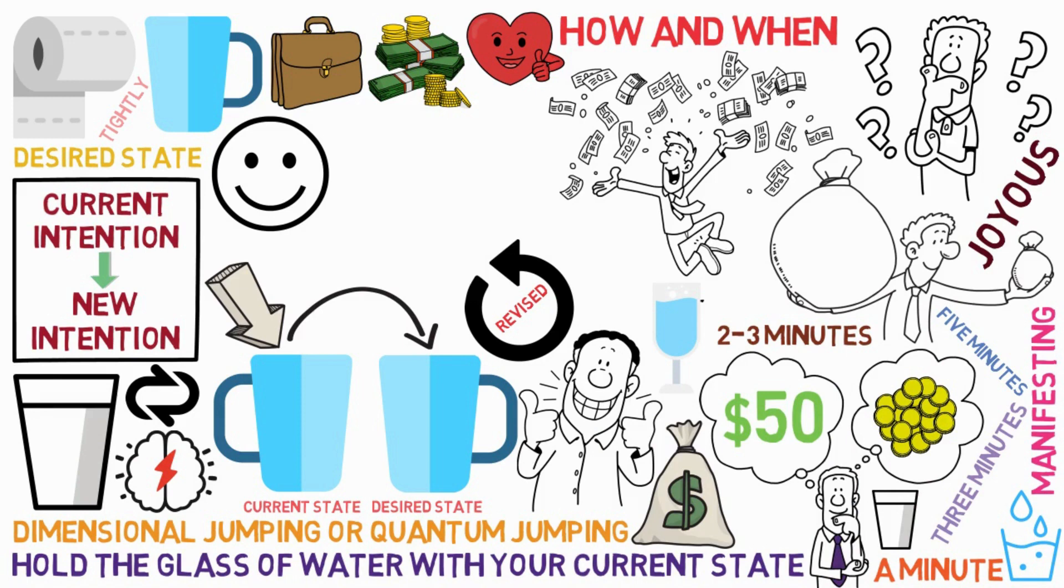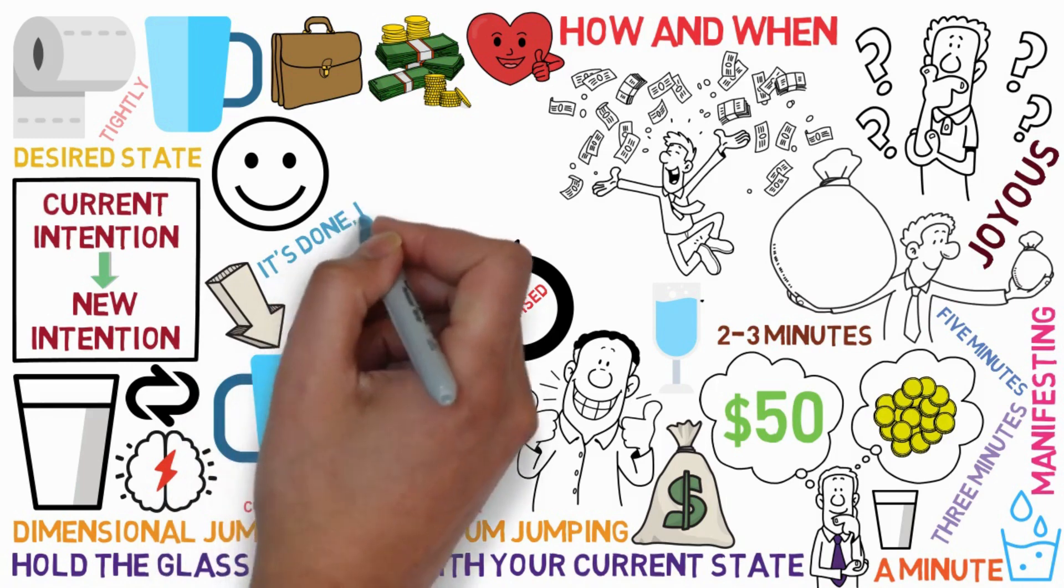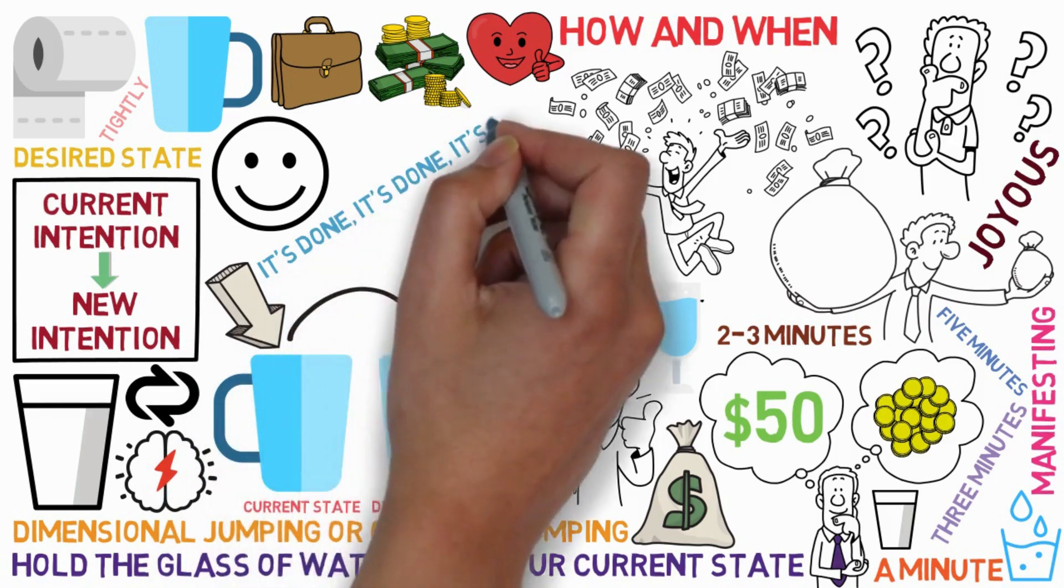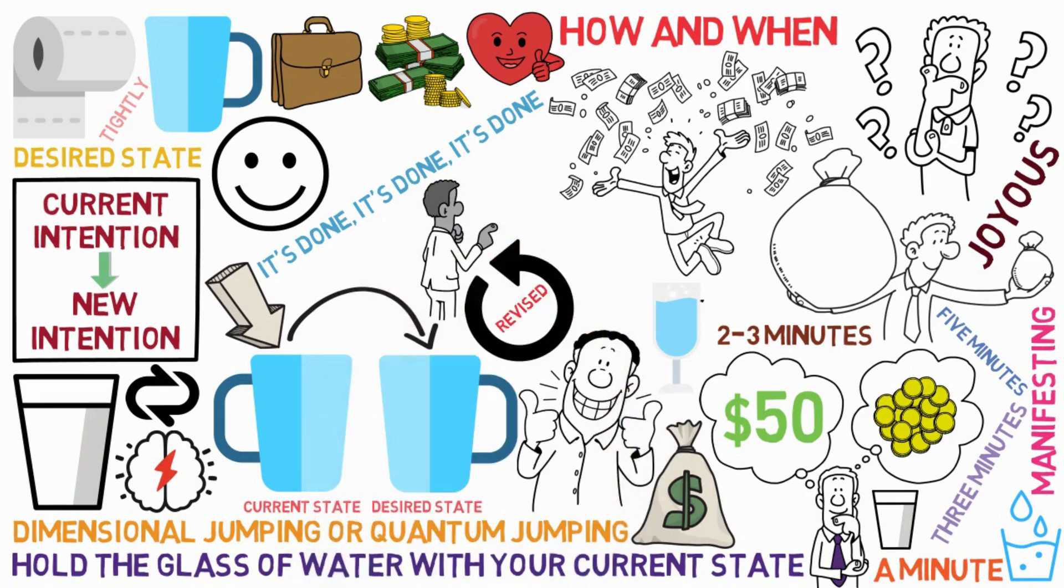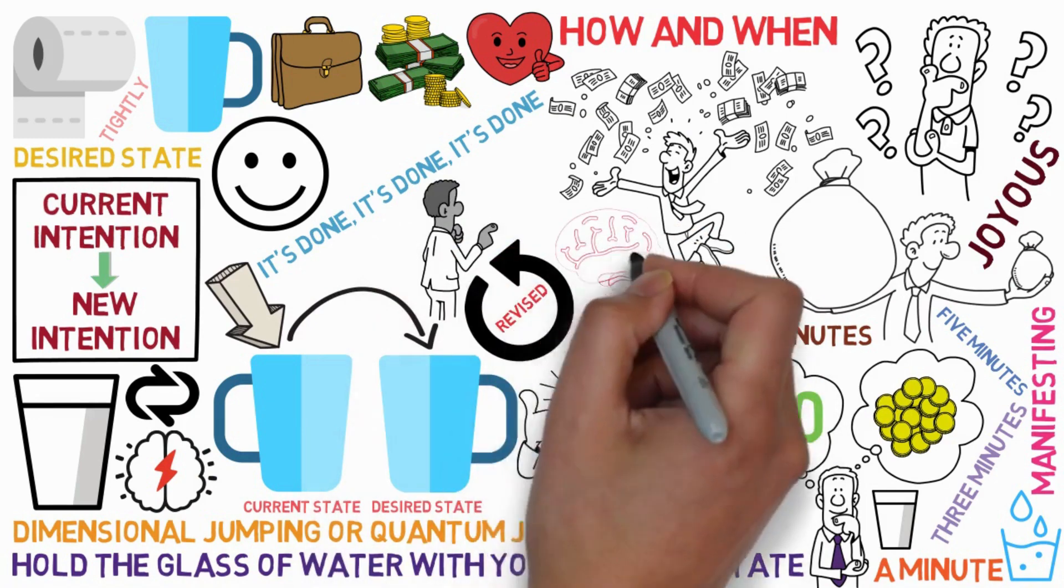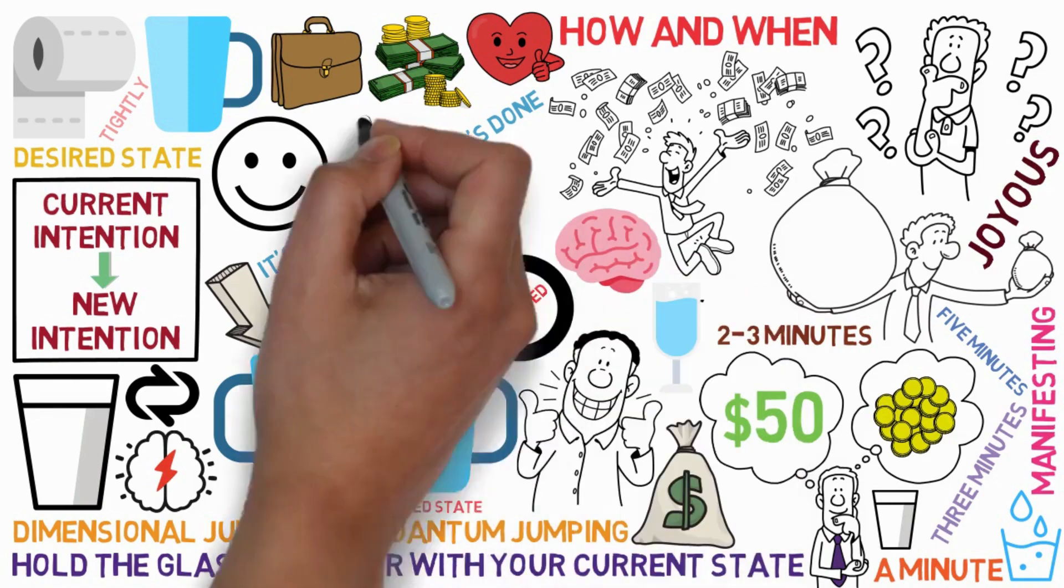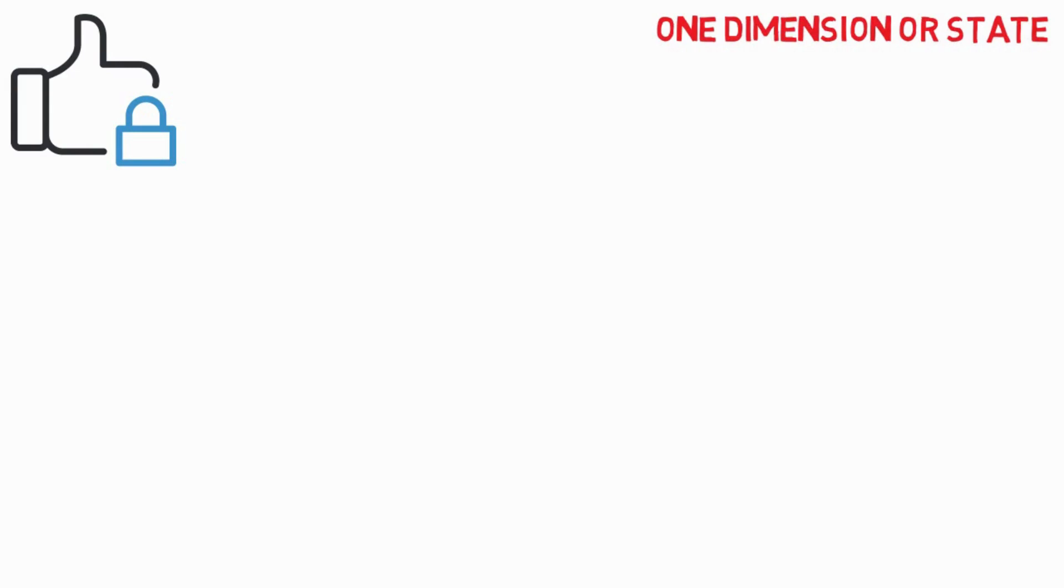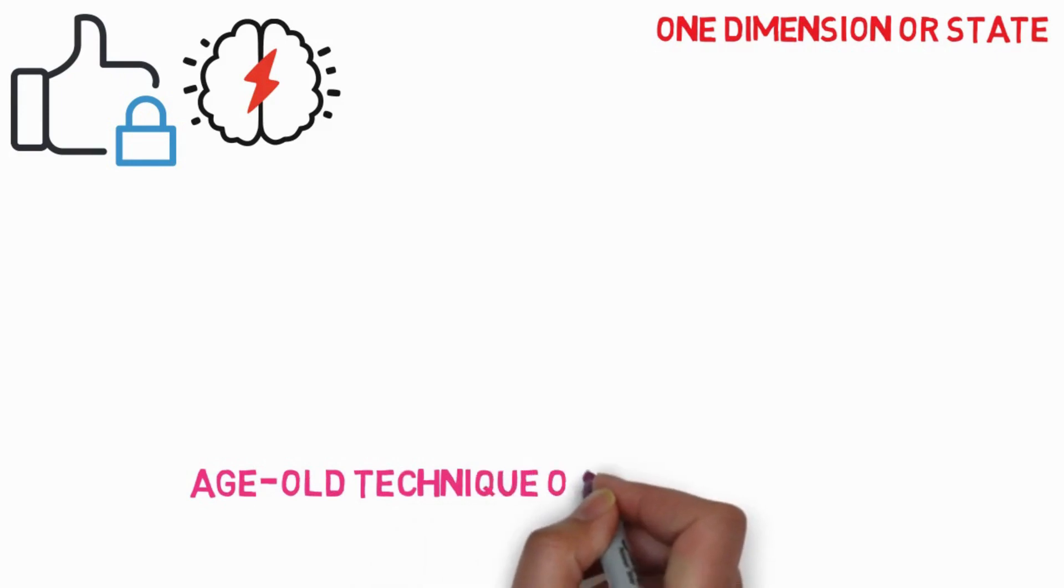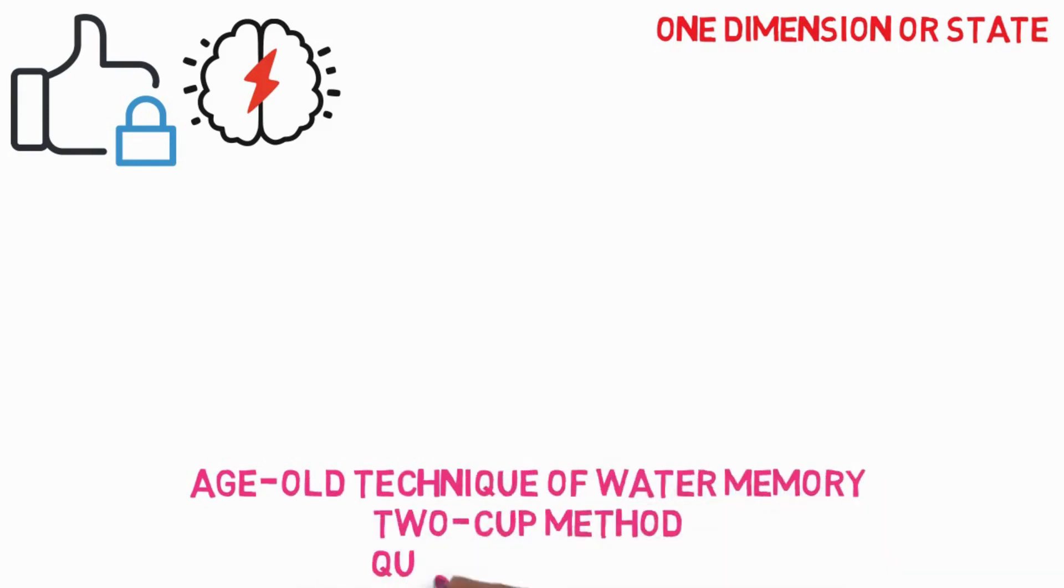While doing so, keep saying in your heart and mind that it's already done. So, it's as if you're instructing your subconscious mind that this thing is already done. Now, it's finished. You've already leaped from one dimension, or state of the subconscious mind, to another, by employing the age-old technique of water memory, slash two-cup method, slash quantum hopping.